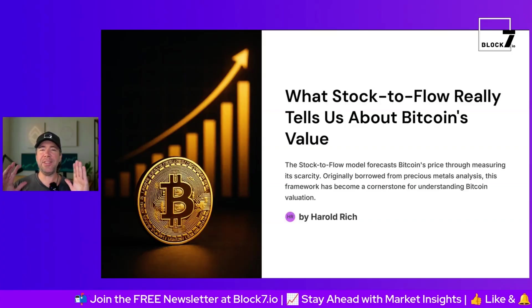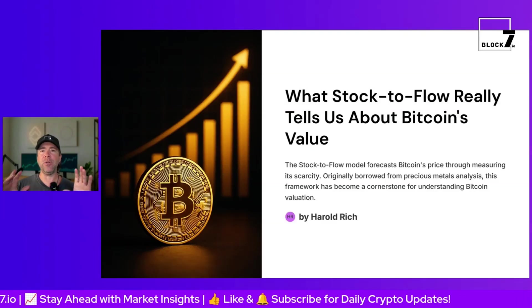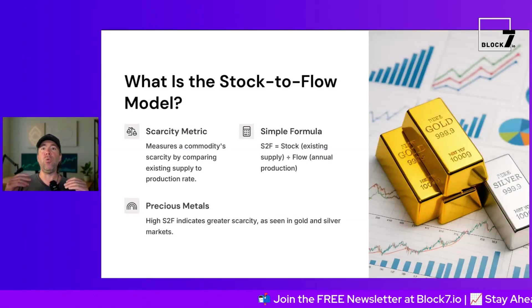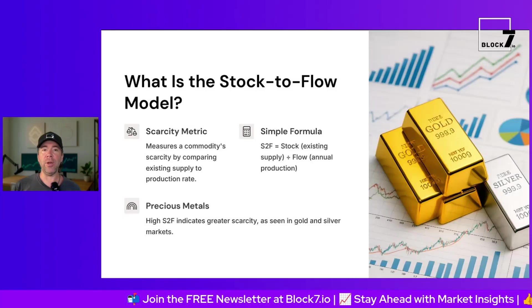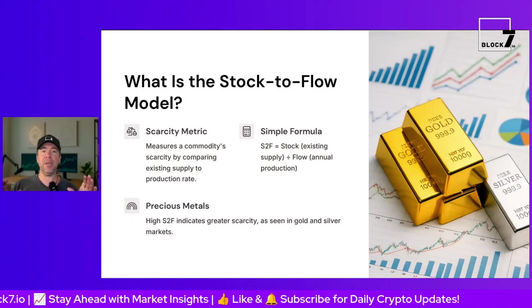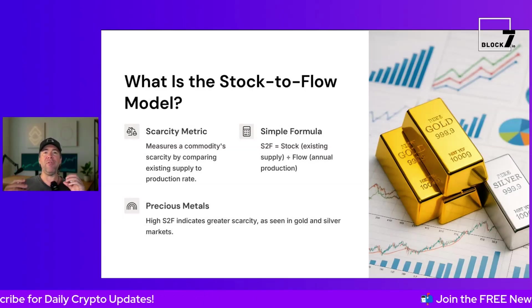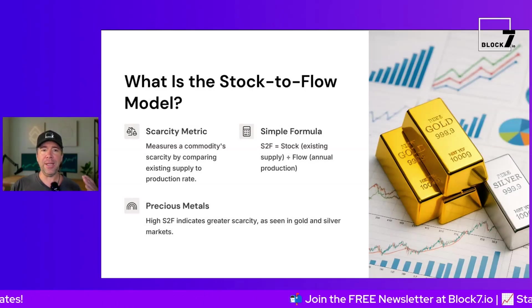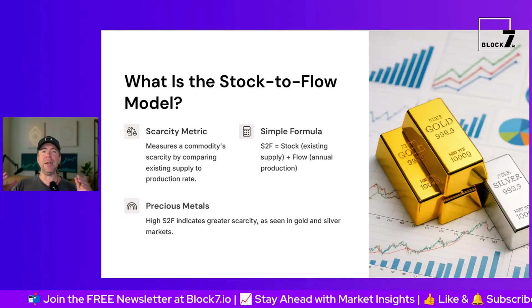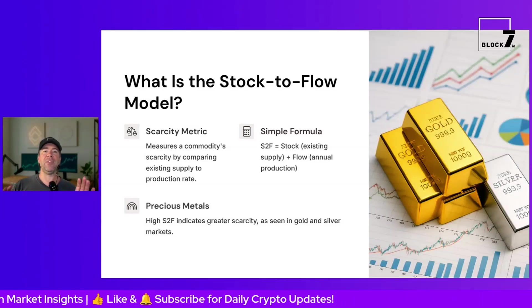After watching this presentation you will understand how the stock-to-flow ratio really works. Don't skip any parts because all parts are important. What is the stock-to-flow model? It's a scarcity metric, measuring a commodity's scarcity by comparing existing supply to production rate. In Bitcoin, you have a certain amount of coins already mined and a certain amount not yet mined — the same as gold, where you have mined gold above earth and gold still in the earth. This is the scarcity metric.